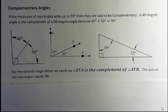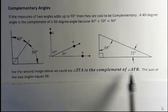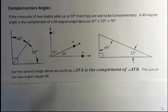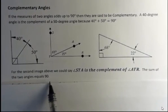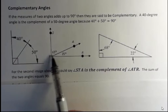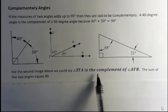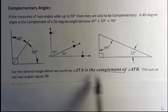Well, for the second image, we could say that angle STA is the complement of angle ATR because the sum of the two angles is 90. 65 plus 25 is 90. So they don't show us the box, but we can add those up and tell that they are complementary. We use that term, is the complement of, a lot of times when we're working with complementary angles.